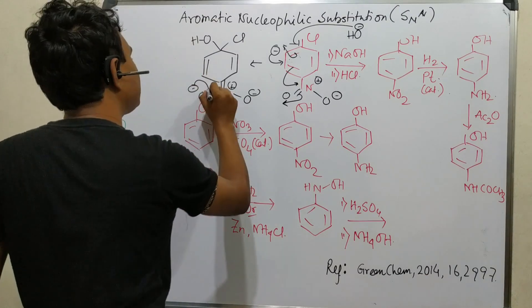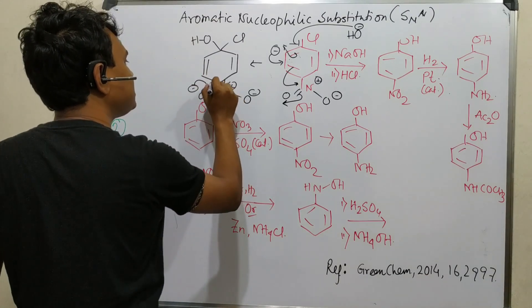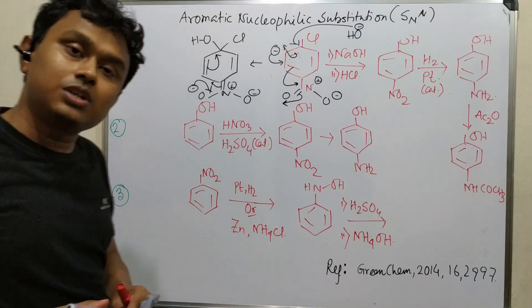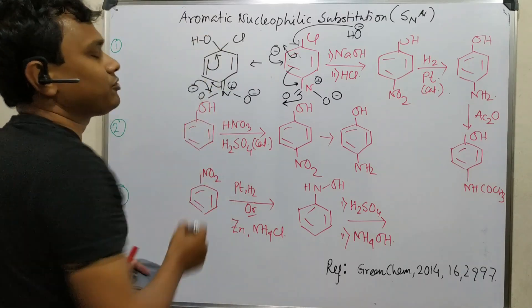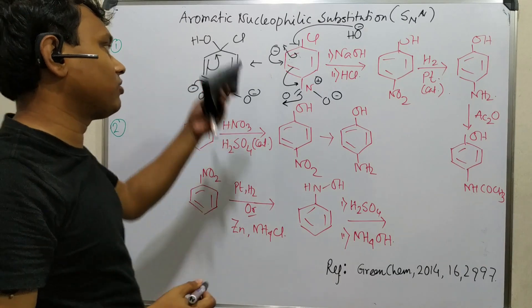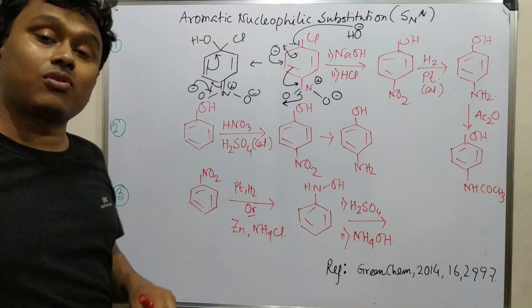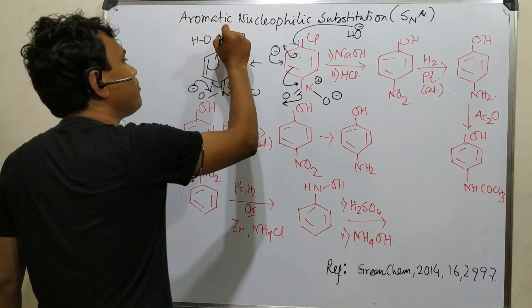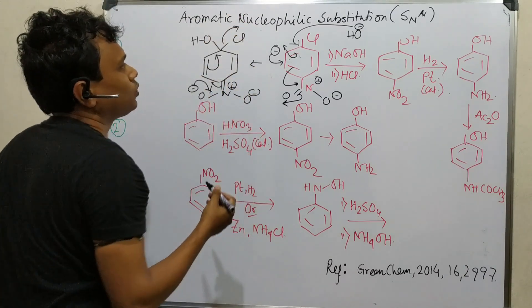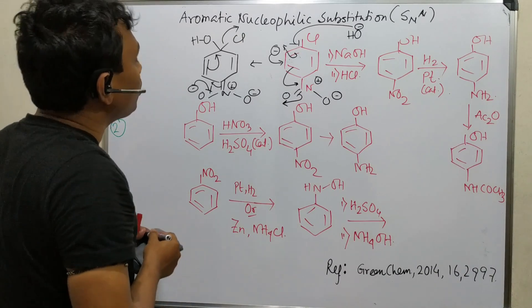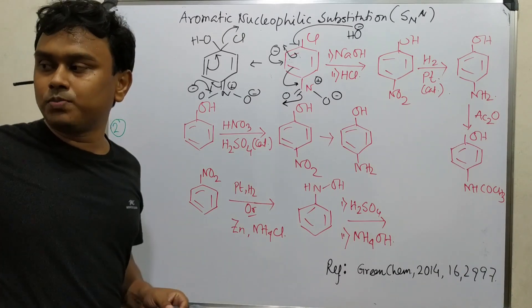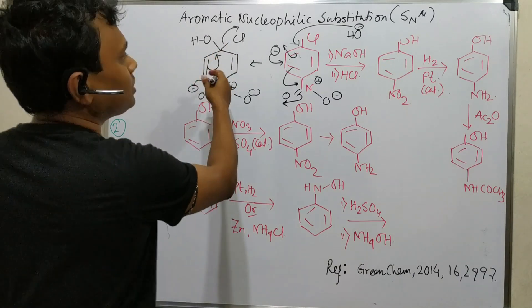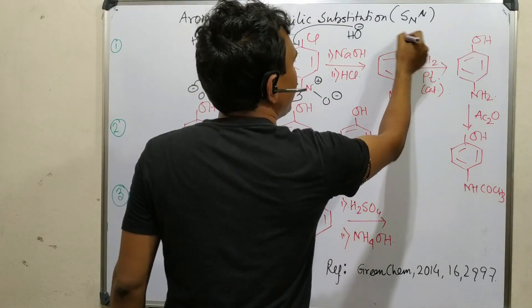After that, this negative charge further pushes here, it goes here. Now the question is who will leave. From here hydroxyl is there, and chloro. But if hydroxyl leaves, there is no good effect. And secondly, hydroxyl is not that good a leaving group compared to chloro. Because better option there is for chloro. So what happened? That's why this chloro will leave. And what it will produce? If chloro leaves, then it will ultimately produce this para-nitrophenol.